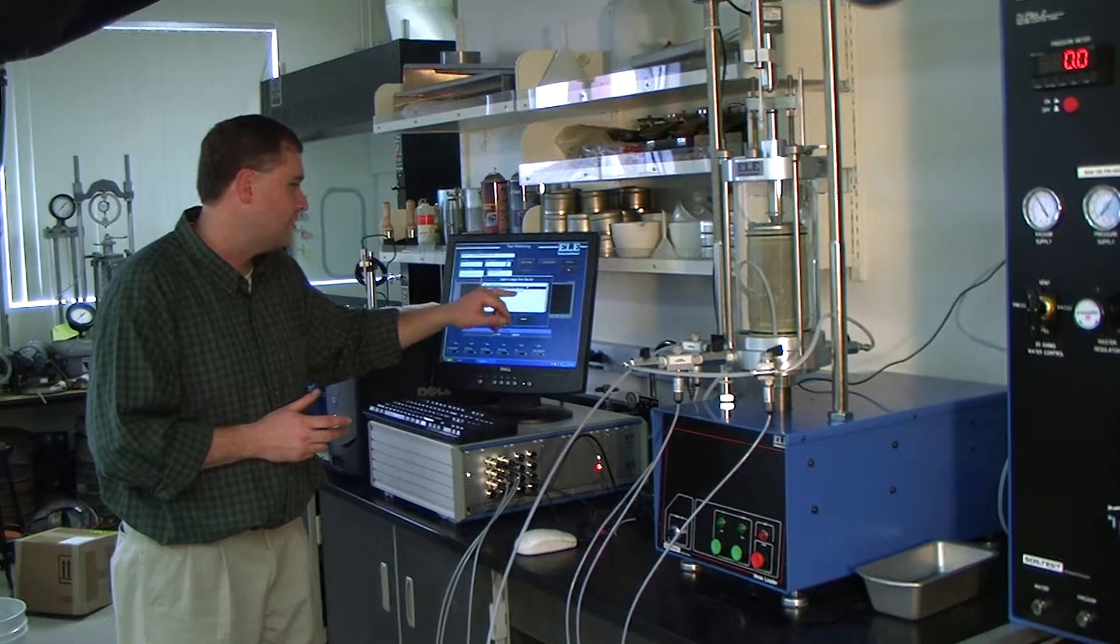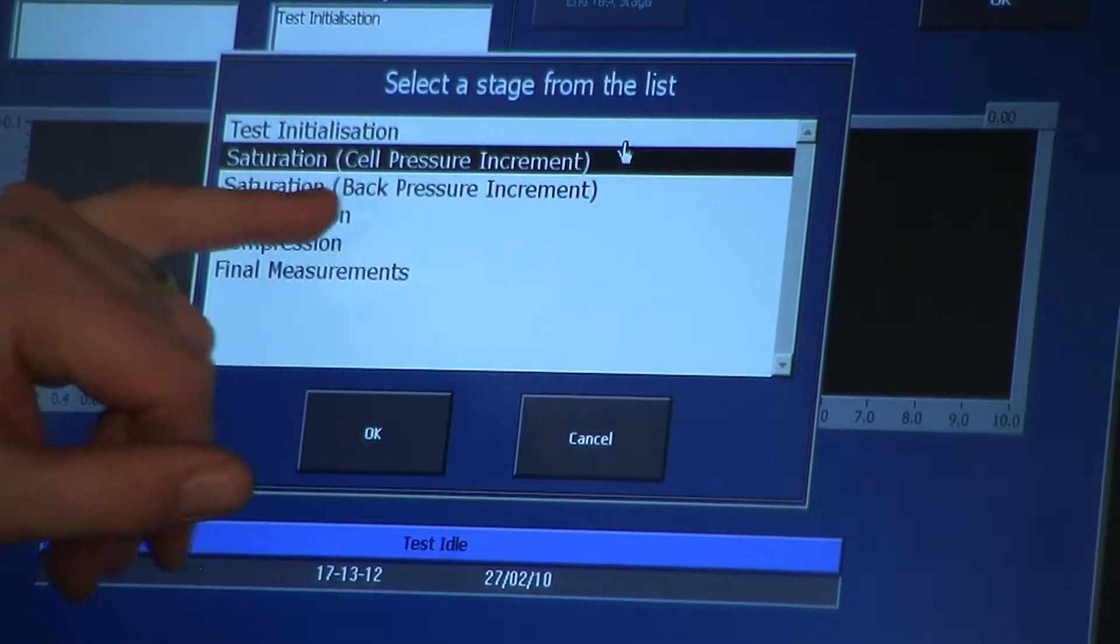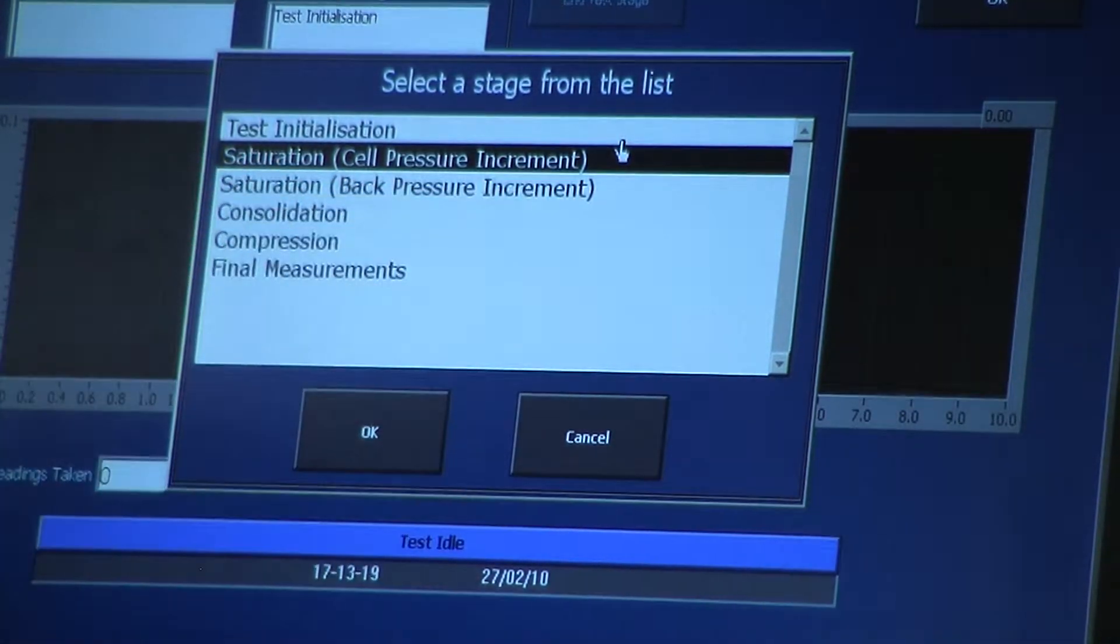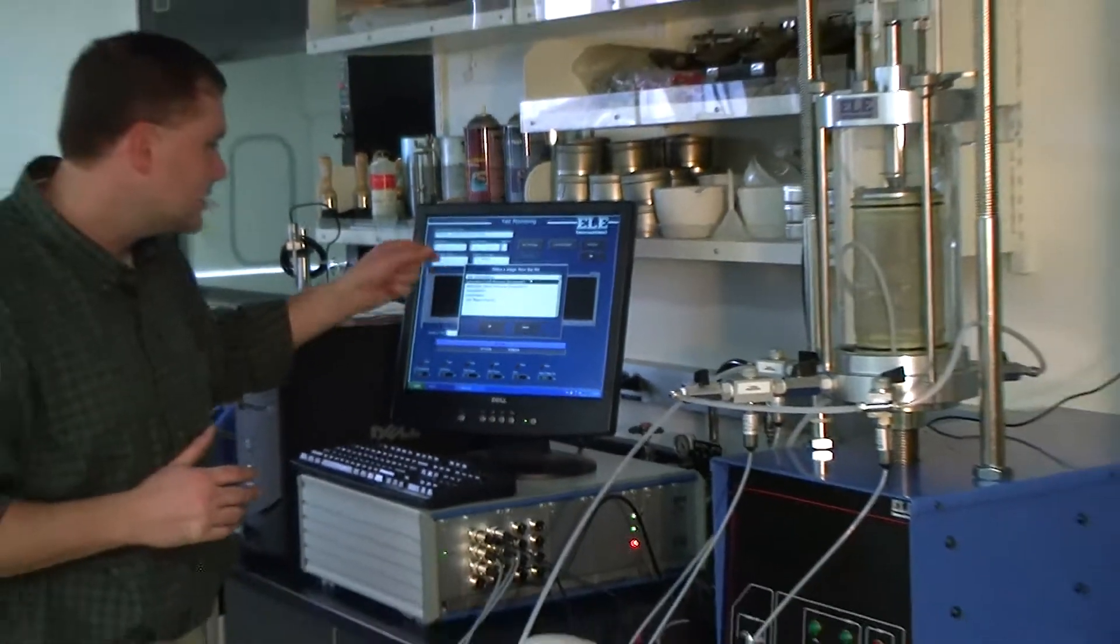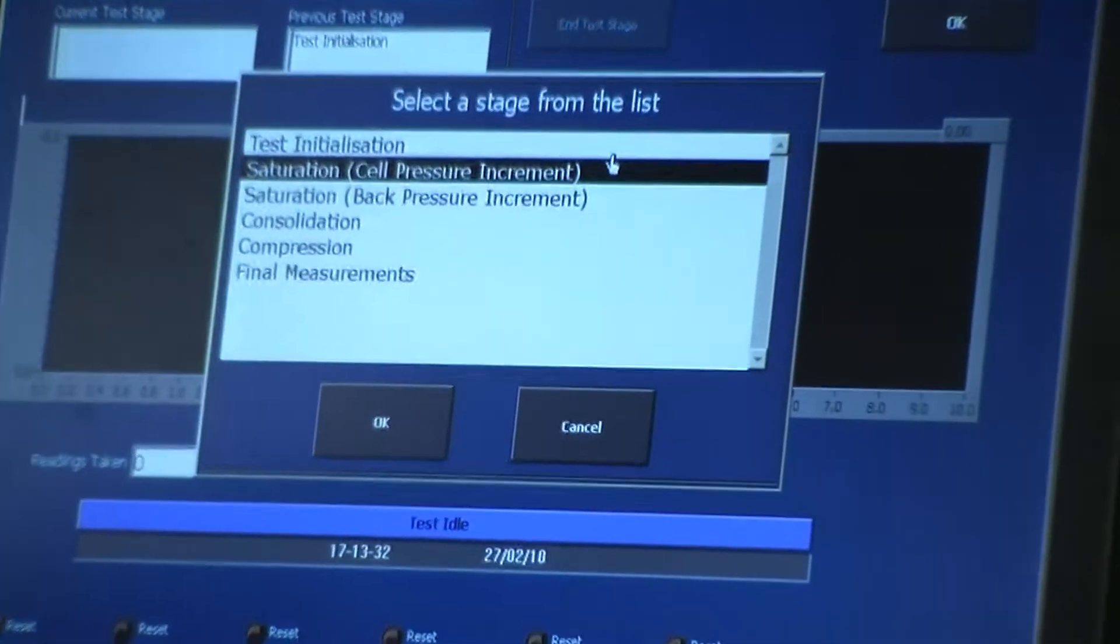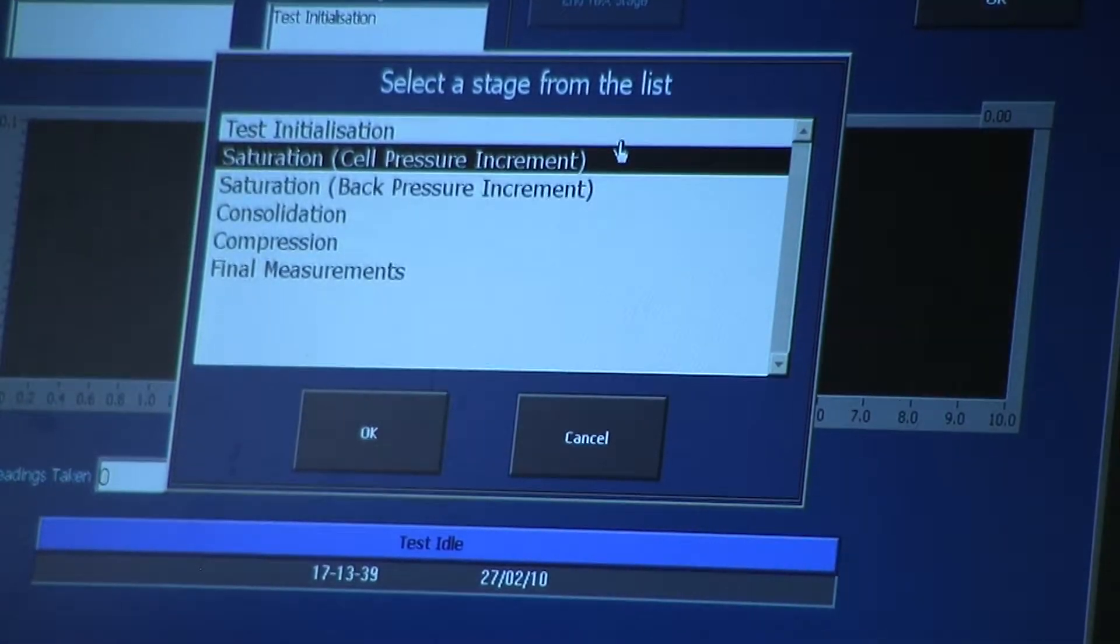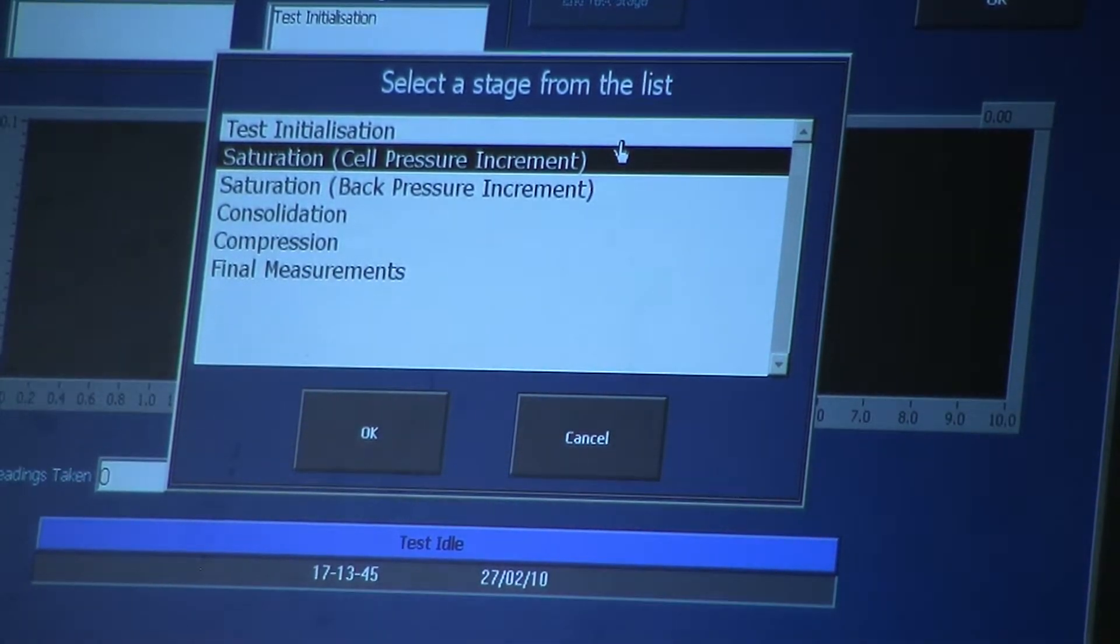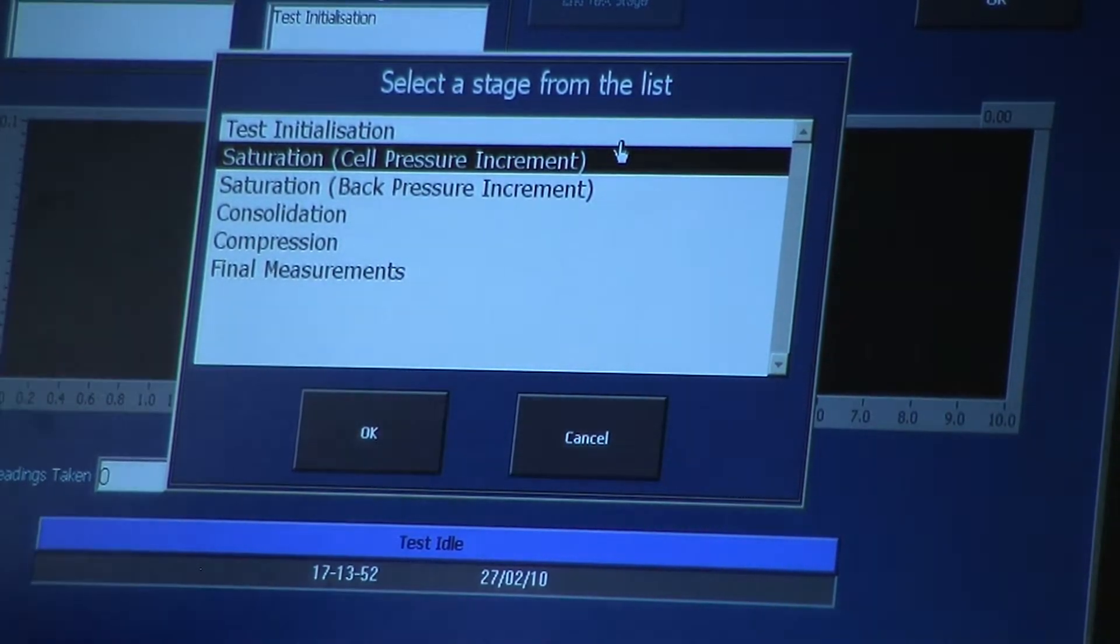The next stage says Saturation Back Pressure Increment. What that should really say is Back Pressure Saturation Stage, because that's the stage at which you actually apply back pressure if the B-value is not high enough. First check your B-value, which is the Cell Pressure Increment. If it's not 0.95 or higher, which is ASTM requirement, you go down to Saturation Back Pressure Increment to saturate it. Then you go back up to check the B-value again. Once you've hit 0.95 or higher, you skip the saturation and go down to Consolidation.